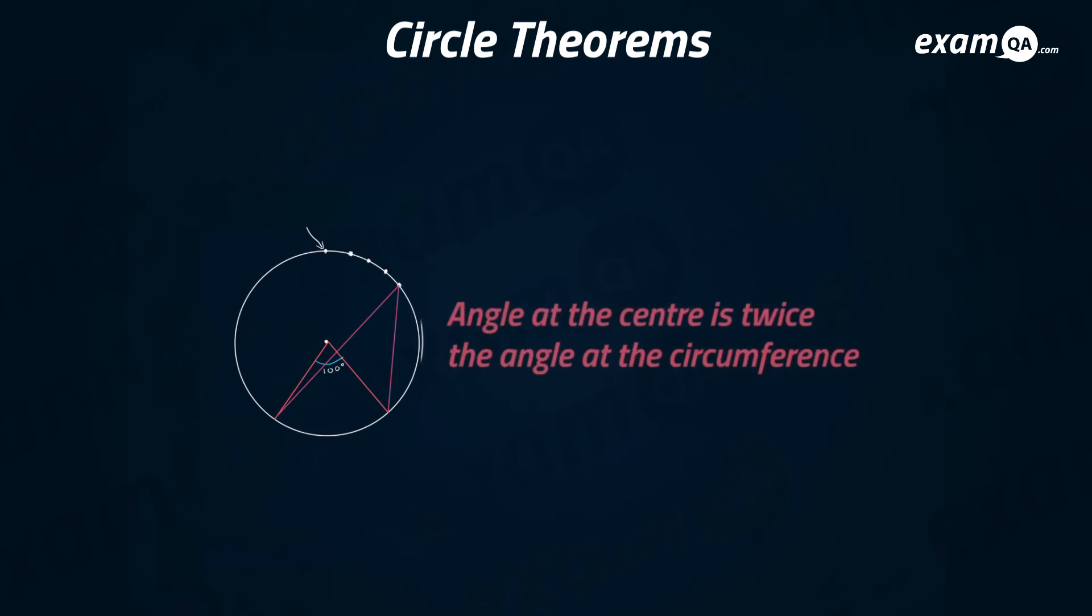As you can see, it actually sometimes looks like this. But even if you had this shape, this would still be 50 degrees. You still have to say angle at the center is twice the angle at the circumference.